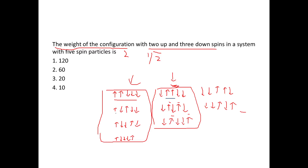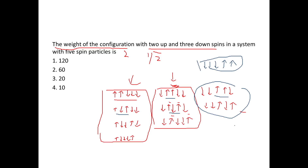Three and one is already covered. The last configuration is four and five up with the first three down. We don't take four and three (already covered as three and four) or four and two (already covered as two and four). So total: four plus three plus two plus one equals ten. The correct answer is option number four.